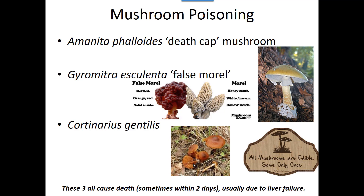We do have morels around our area, so if you go morel hunting, know the difference from the false morel Gyromitra esculenta. A normal morel is always white or grayish-tan in color; a false morel has some orange or reddish color to it. The inside of a regular morel is completely hollow — that's why they don't weigh much. A false morel is always solid. The texture is also different: a real morel has a honeycomb texture, while a false morel is bumpier. There are false morels around, so only eat grayish-tan, hollow ones — they can and will cause death.